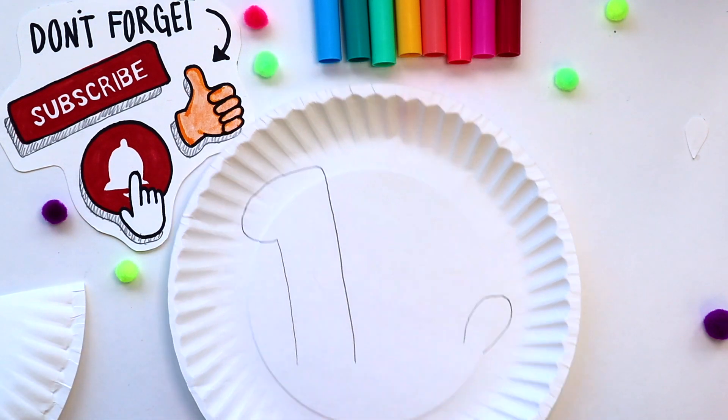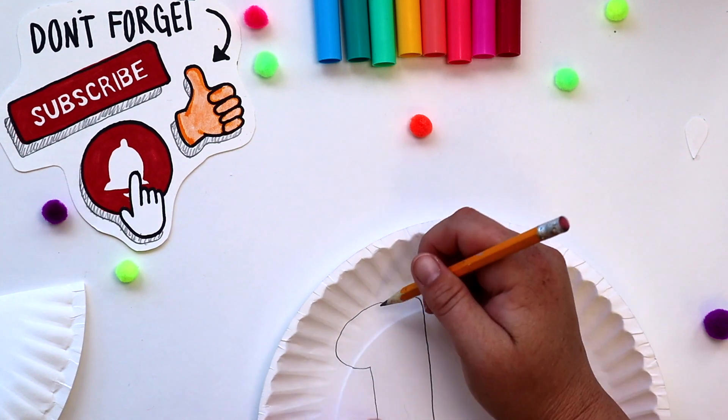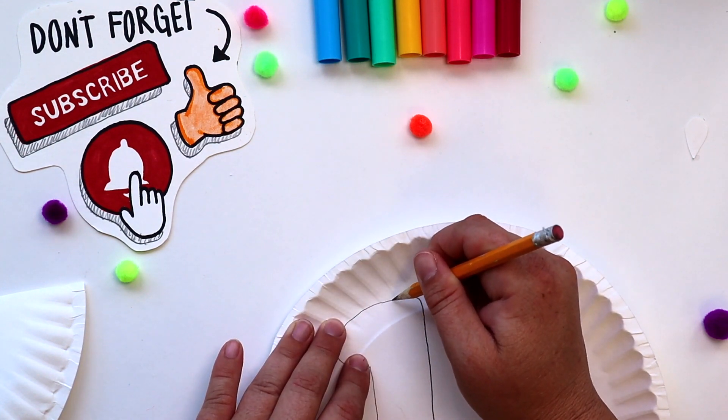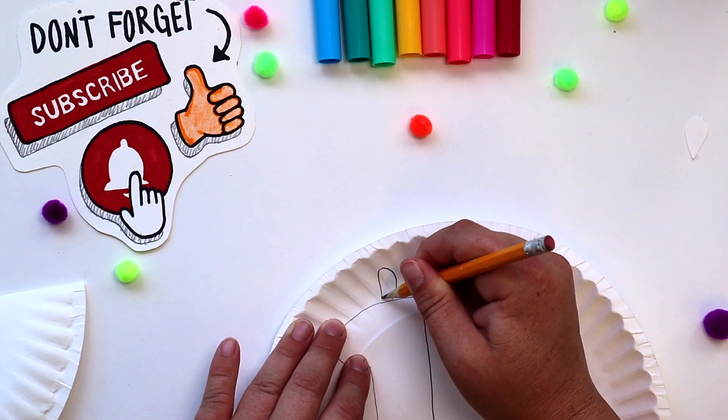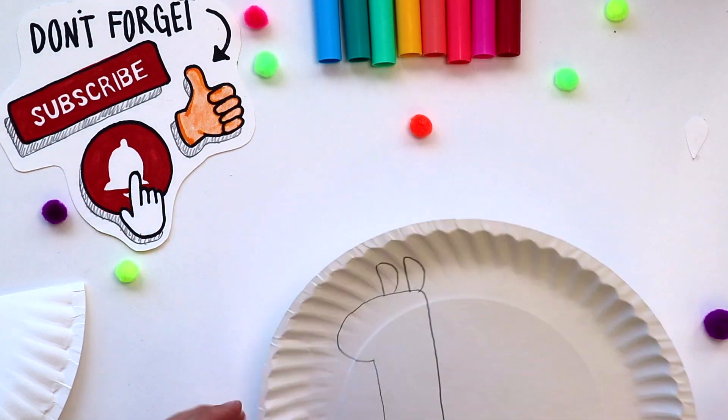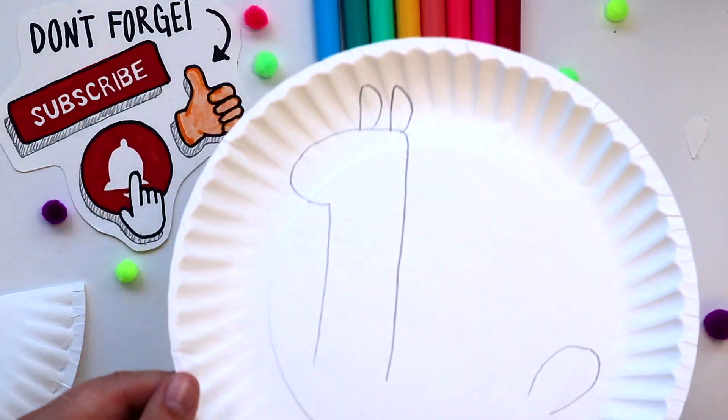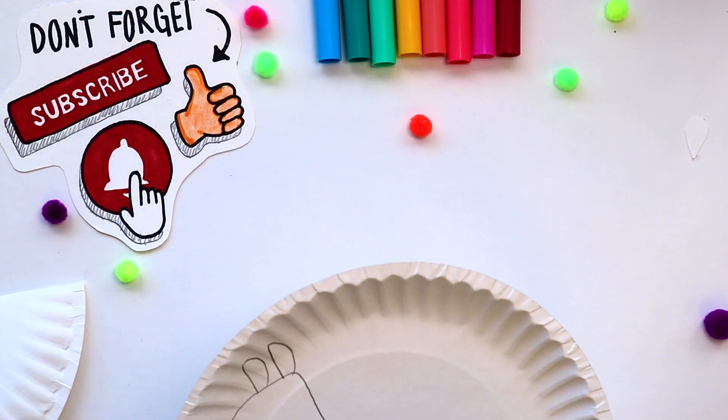All right guys, before we start cutting these out, I'm just going to add on two little ears. We're going to go curved and straight down, curved and straight down. Now let's get everything out and it's time to cut. I'm going to speed it up from here. Ready, set, go!